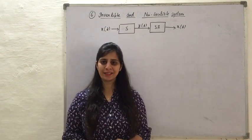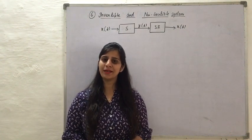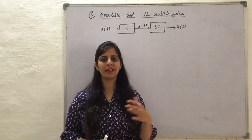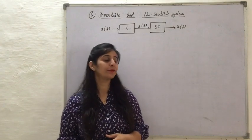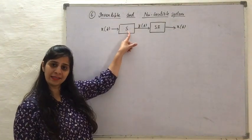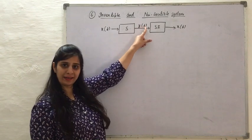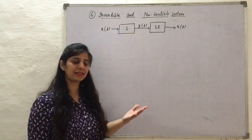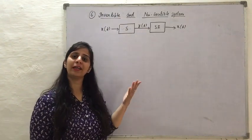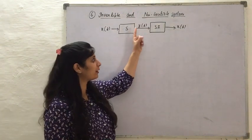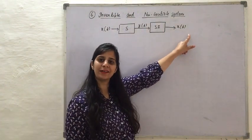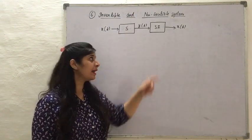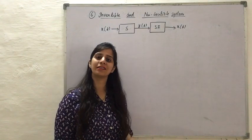To define an invertible system: an invertible system is a system for which it is possible to design one more system that can produce the inverse operation of that system. For example, if we have a system S that gives the output Yt from the input Xt, we can design a system that does the inverse operation of S so that we are able to get Xt back. Then system S is called an invertible system, and Si is called the inverse system.